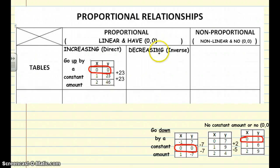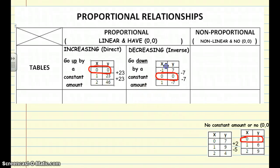Now as I said, we can also have a decreasing proportional relationship which means it goes down by a constant amount. Notice it's the same thing except one goes up, one goes down. And here's an example of a table in which again we have the point (0,0) and it goes down by 7 from one value to the next.